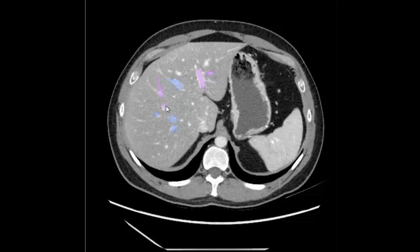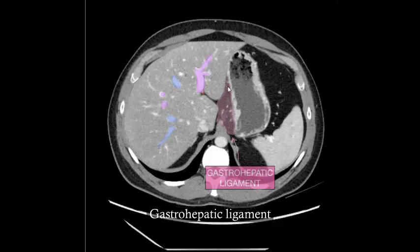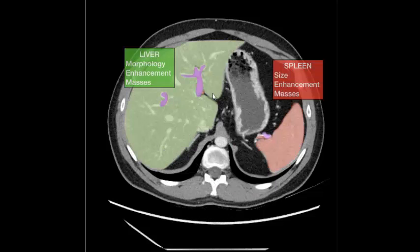Portal vein branches, stomach, abdominal aorta, spleen. Liver, hepatic vein branches, portal vein branches, gastro-hepatic ligament, abdominal aorta. Spleen, liver, portal vein, spleen, splenic artery, splenic vein, stomach, abdominal aorta.